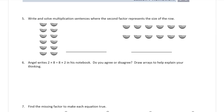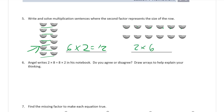Number five: write and solve multiplication sentences where the second factor represents the size of the row. Looking at this array, the second factor is the size of the row and the first factor is how many rows there are. There are six rows times two — the row size is two — equals twelve. In the other array, there are one, two, three, four, five, six in each row but there are two rows, so it's two times six equals twelve. It's still twelve.